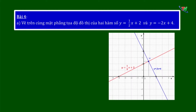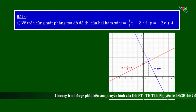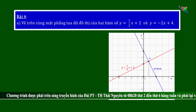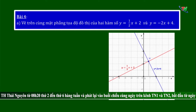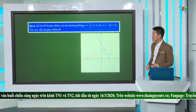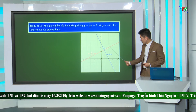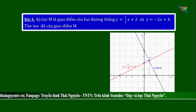Bài 4: ta xác định điểm có tọa độ (0, 2) và điểm (âm 4, 0) nằm trên trục hoành đều thuộc đồ thị hàm số Y bằng 1 phần 2 x cộng 2. Vẽ đường thẳng qua 2 điểm này ta được đồ thị hàm số Y bằng 1 phần 2 x cộng 2. Tương tự, ta vẽ được đồ thị hàm số Y bằng âm 2x cộng 4, cắt trục tung tại điểm có tung độ bằng 4 và cắt trục hoành tại điểm có hoành độ bằng 2. Giao điểm của 2 đường thẳng này là M. Quan sát trên mặt phẳng, hoành độ của M nằm trong khoảng (0, 1), tung độ của M nằm trong khoảng (2, 3).